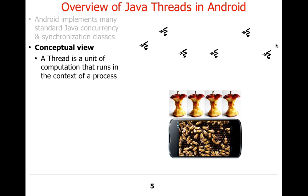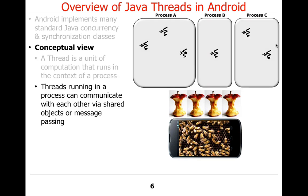Conceptually, a thread is a unit of computation that runs in the context of a process. You can have multiple threads in a process, and typically in Java you have multiple threads inside a virtual machine — a Java virtual machine — which runs in a process. Threads can communicate within a process either by passing messages through queues, or by using shared objects with mutually exclusive access to those variables.